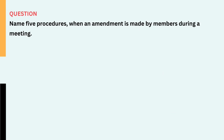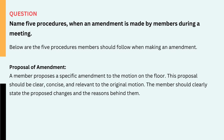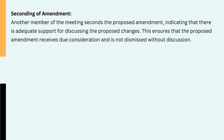Question: Name five procedures when an amendment is made by members during a meeting. Below are the five procedures members should follow when making an amendment: 1. Proposal of amendment — a member proposes a specific amendment to the motion on the floor. This proposal should be clear, concise, and relevant to the original motion. The member should clearly state the proposed changes and the reasons behind them. 2. Seconding of amendment — another member of the meeting seconds the proposed amendment, indicating that there is adequate support for discussing the proposed changes. This ensures that the proposed amendment receives due consideration and is not dismissed without discussion.